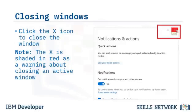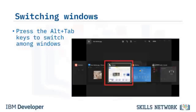You can quickly locate and switch windows by pressing the Alt and Tab keys. Your screen will display windows in a carousel format. Keep the Alt key pressed and repeatedly press Tab to switch to the next window, then click and hold to display the selected window.